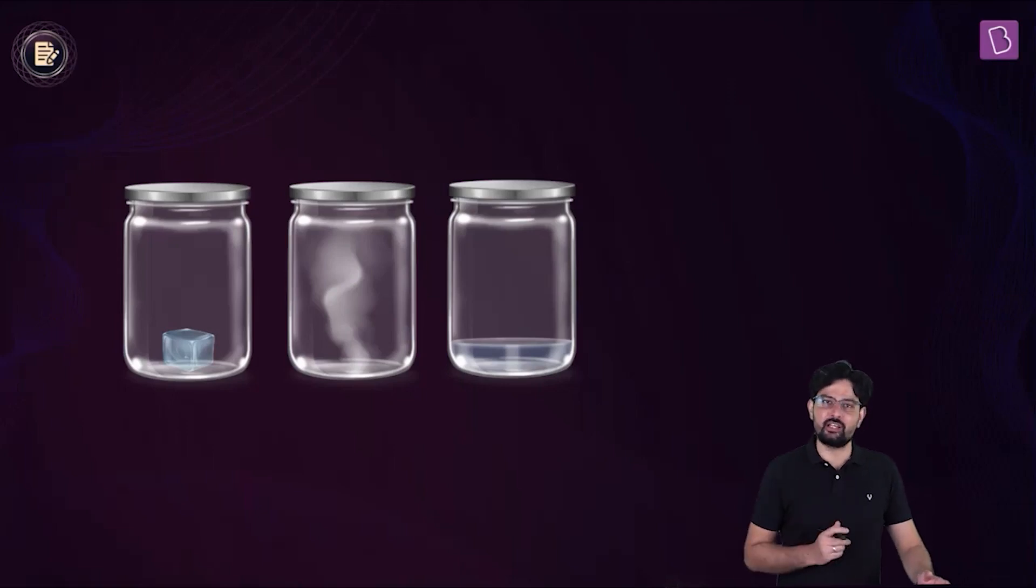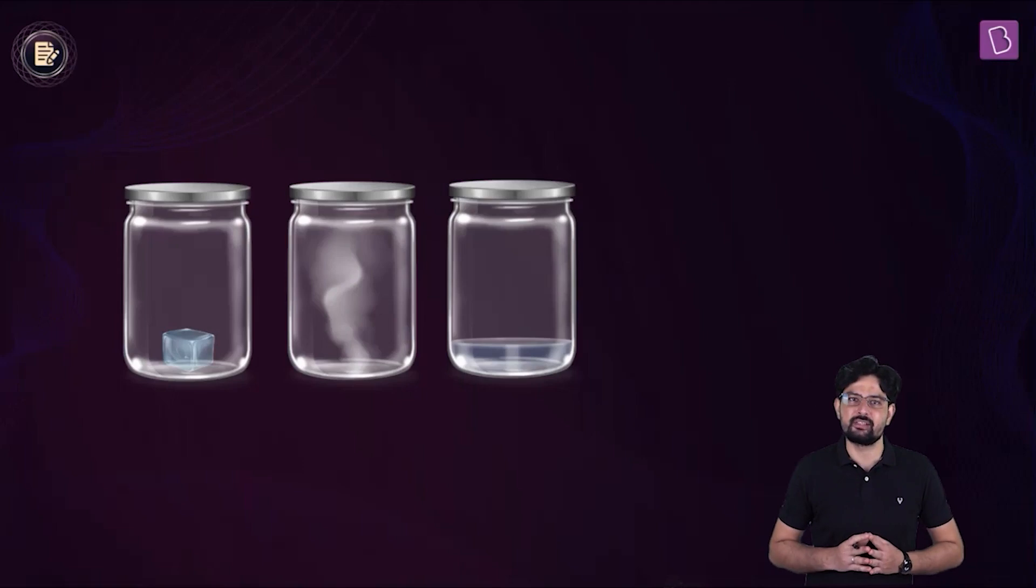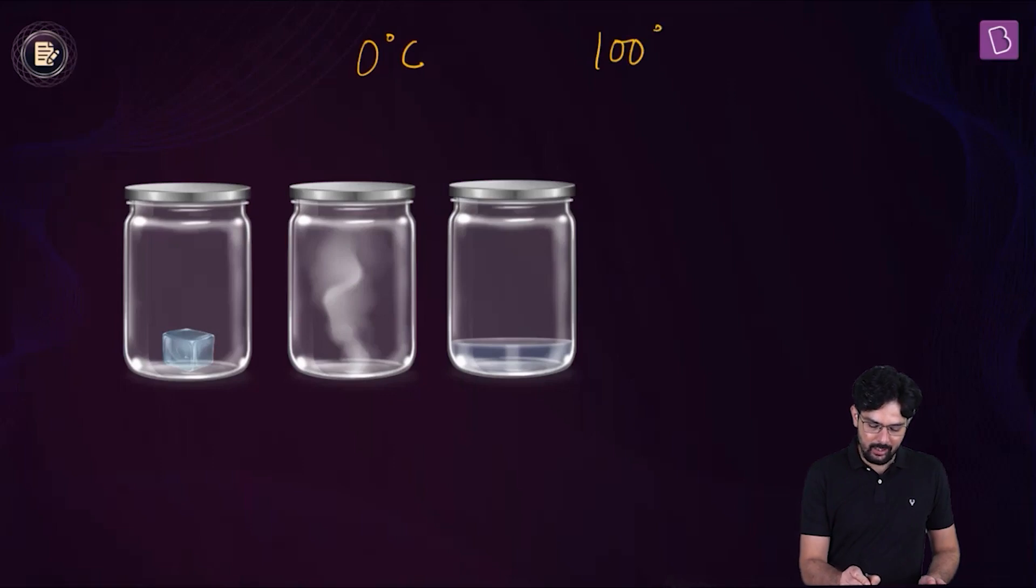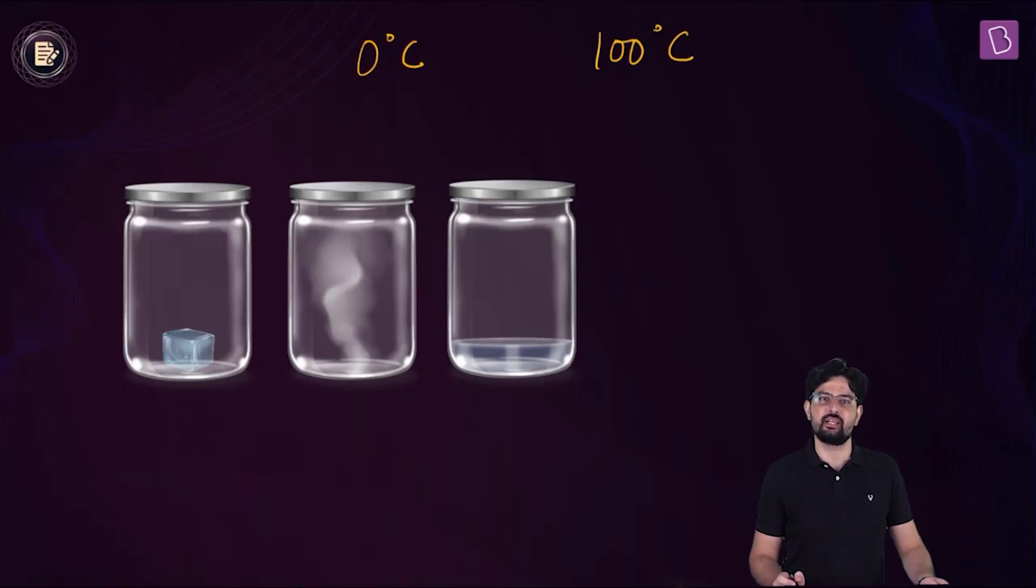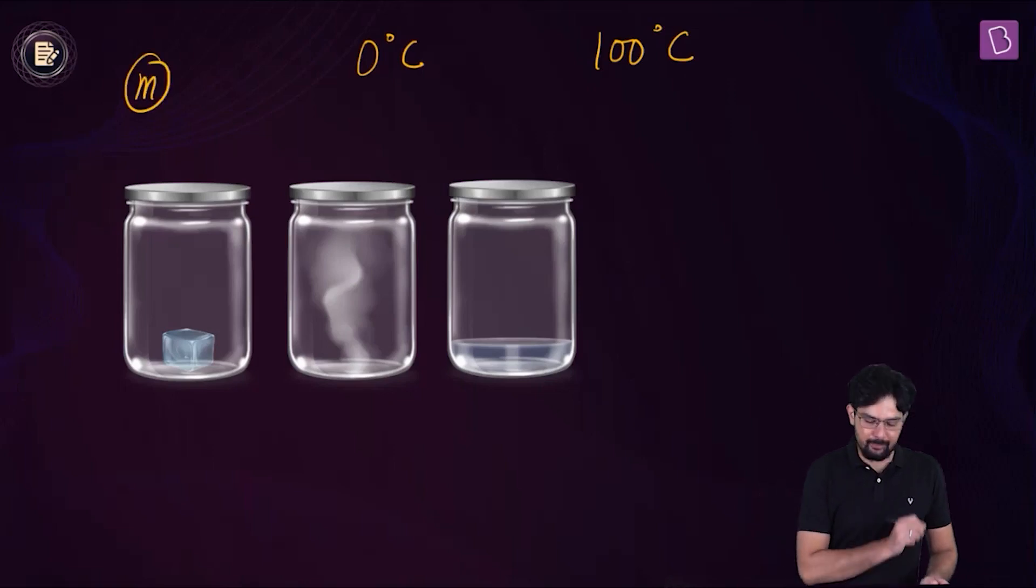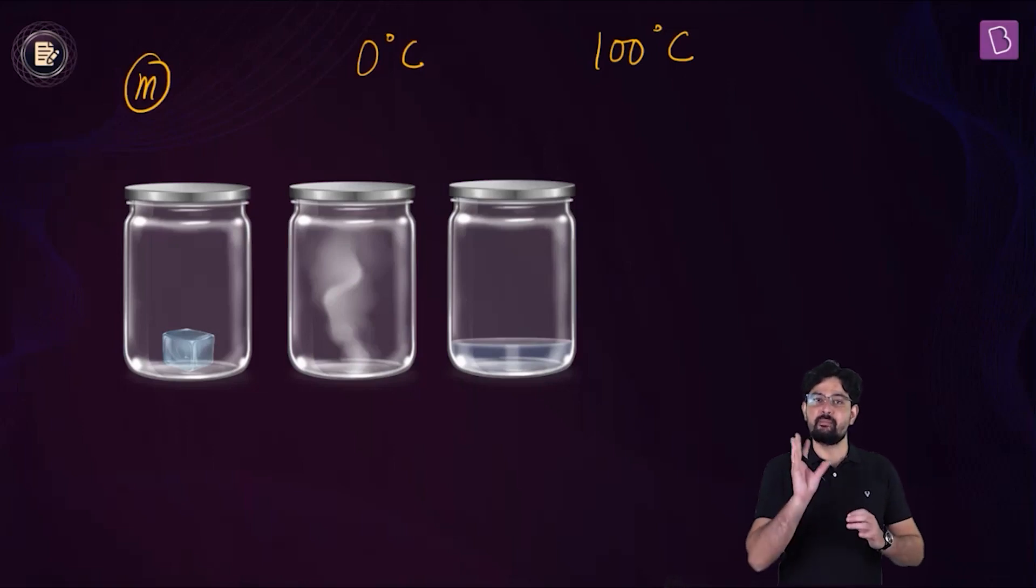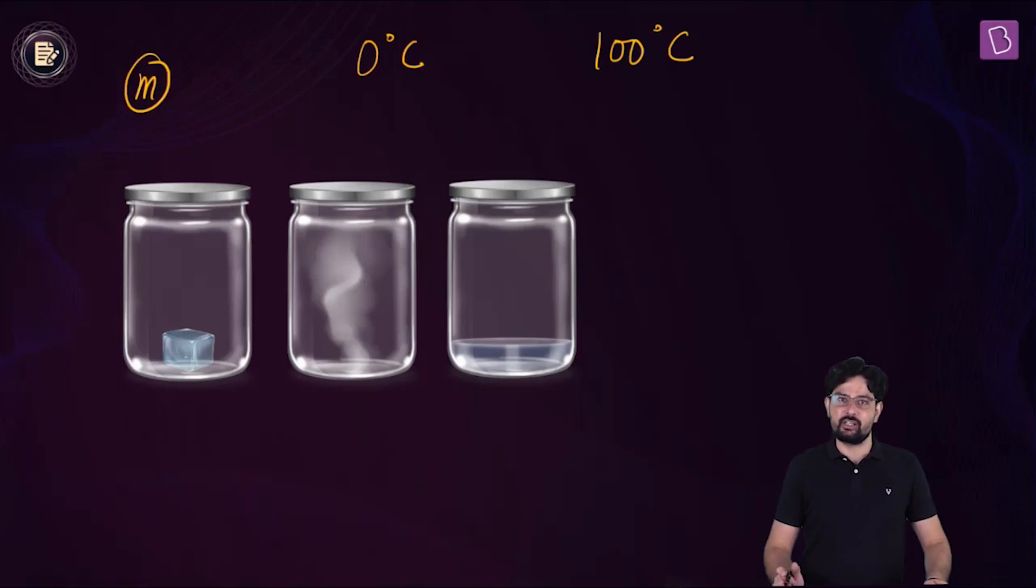So basically, I want you to find out at what temperature should the water be at? Should it be at 0 degree Celsius or should it be at 100 degree Celsius? Remember, you have to find out the minimum value of M. And M is the mass of the steam from which the heat is taken and this heat is utilized to melt the ice. So think about it. Should the water that is obtained ultimately be at 0 degree Celsius or should it be at 100 degree Celsius, such that the value of M is minimized?